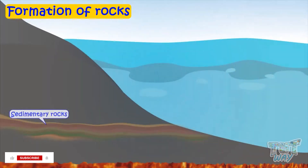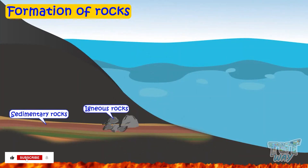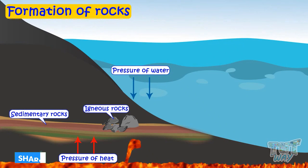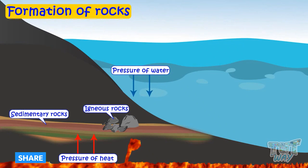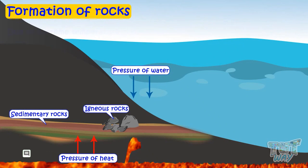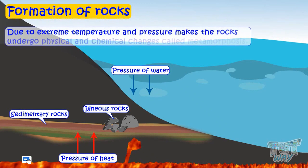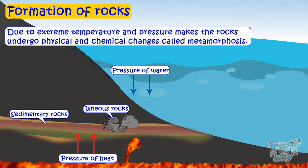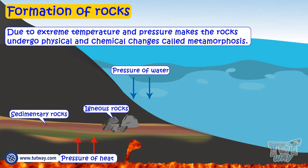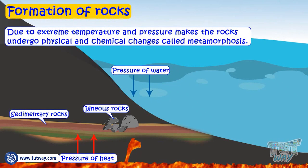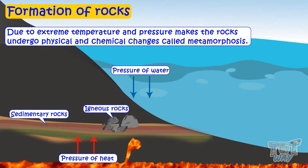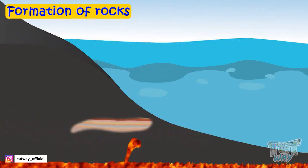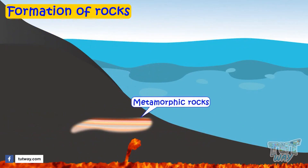These igneous and sedimentary rocks get trapped under high temperature and pressure. And this extreme temperature and pressure makes the rocks undergo physical and chemical changes, which is called metamorphosis. And these sedimentary and igneous rocks change to metamorphic rocks.